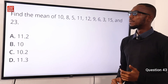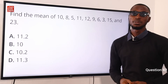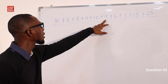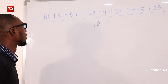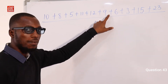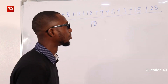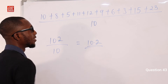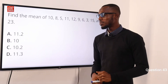Question 43: Find the mean of 10, 8, 5, 11, 12, 9, 6, 3, 15, and 23. Adding them up: 10 plus 8 is 18, plus 5 is 23, plus 11 is 34, plus 12 is 46, plus 9 is 55, plus 6 is 61, plus 3 is 64, plus 15 is 79, plus 23 is 102. Dividing by 10 gives 10.2. Option C is correct.